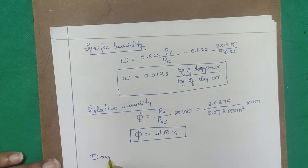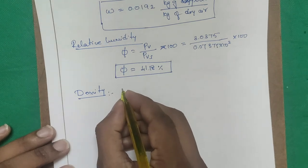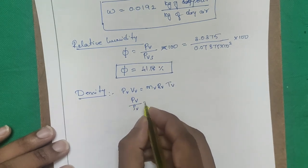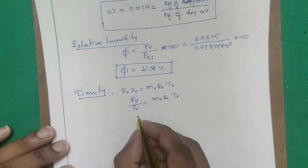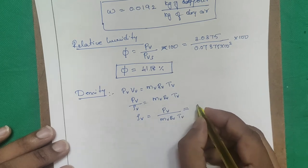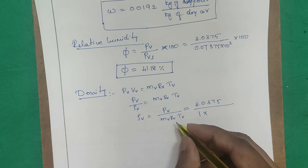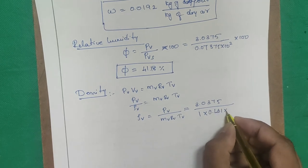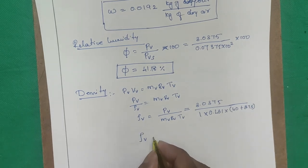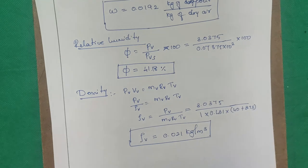Step 5 — Density of vapor: using PV·VV = mV·RV·TV → ρ = PV / (RV × TV). With PV = 3.0375 kPa, RV = 0.461, TV = 40 + 273 = 313 K: density = 0.021 kg/m³ (approximately 0.21 kg/m³).